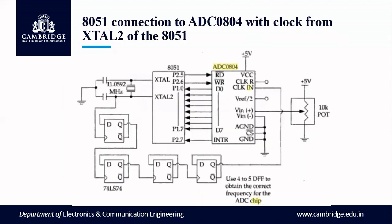If you want to reduce or increase the frequency, an additional external clock can be connected. A crystal oscillator is connected through D flip-flops to match the frequency and synchronize conversion between the 8051 and the ADC chip. Normally 4 to 5 D flip-flops are used to obtain the correct frequency for the ADC chip. In this case, clock R is left open, and the same connections are made with 8051 and ADC0804.